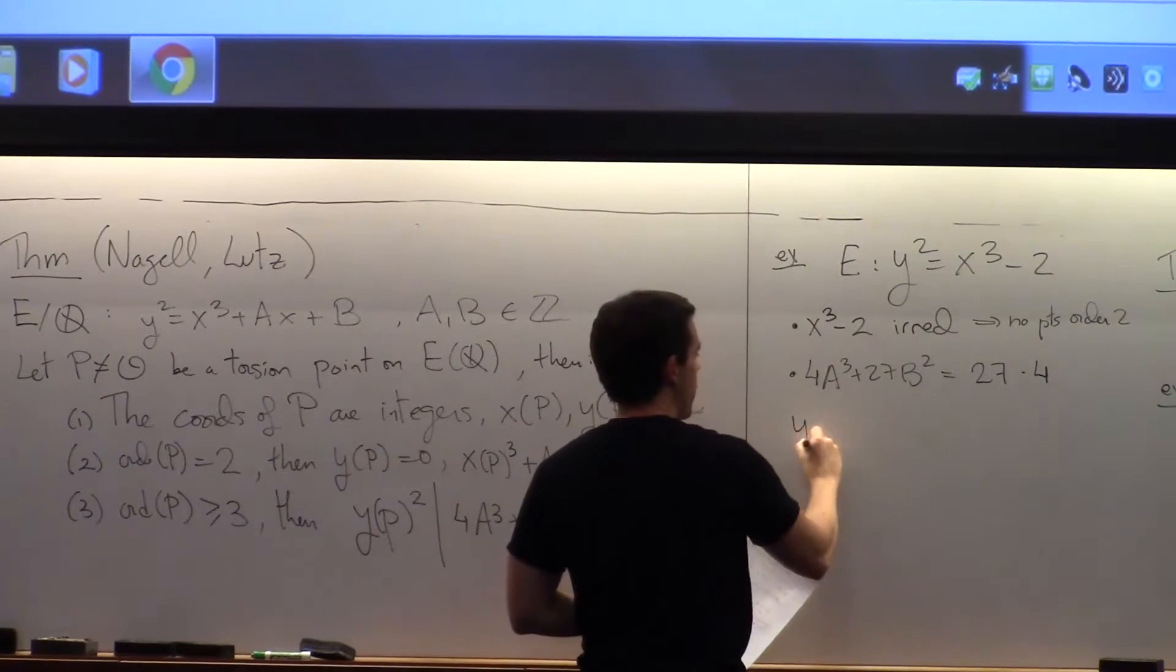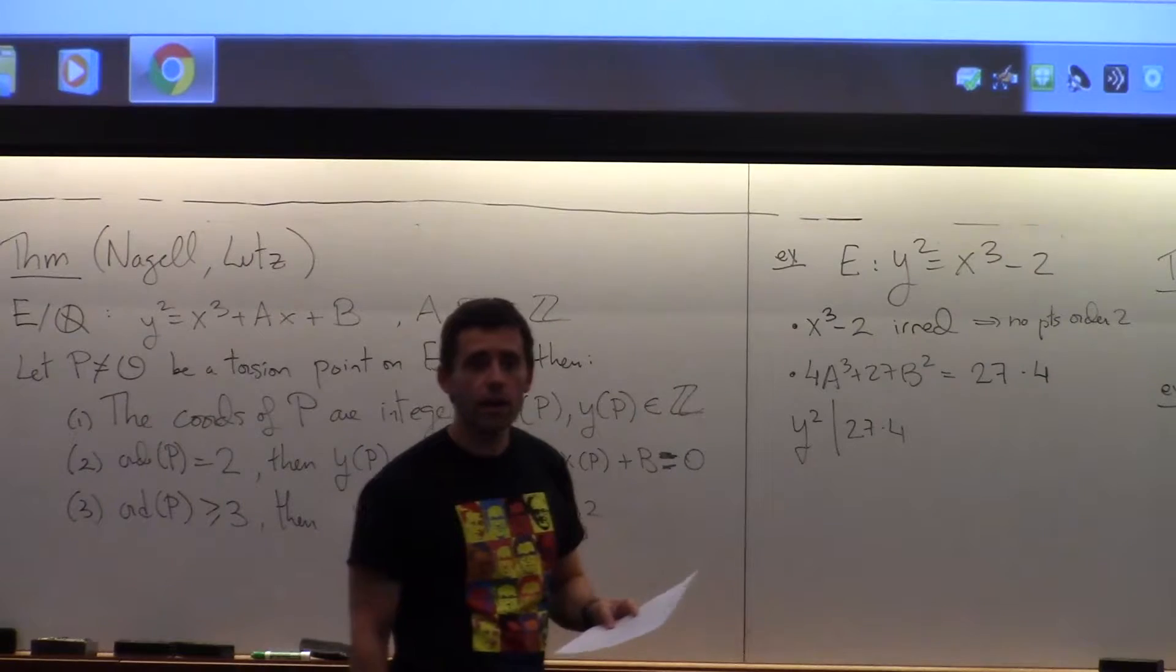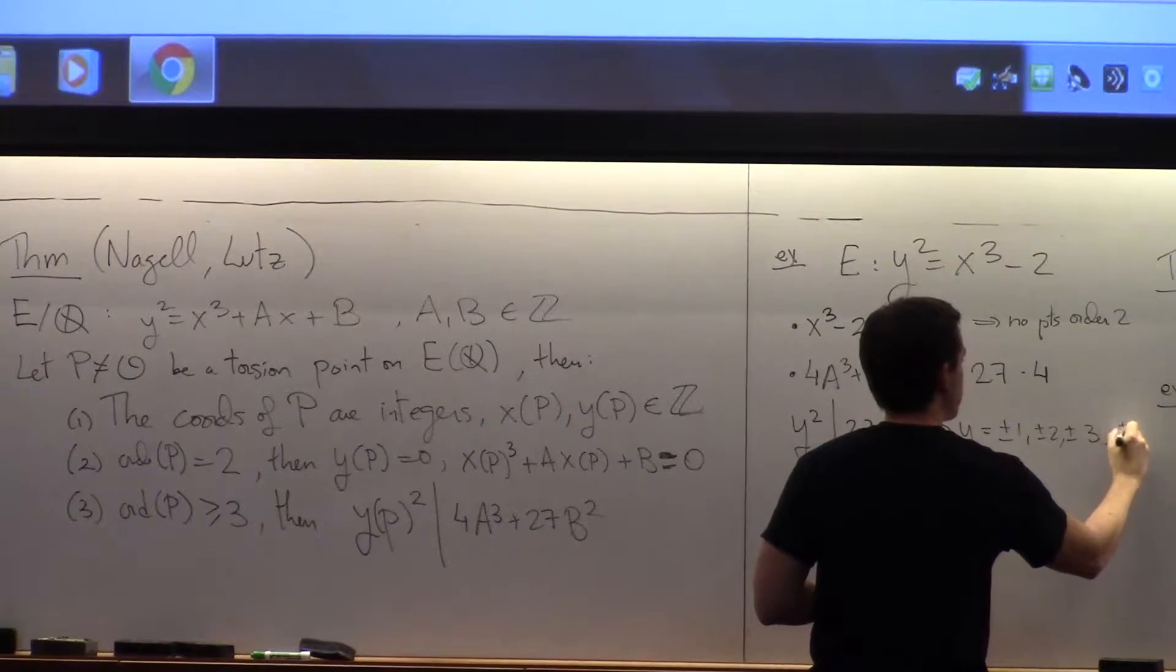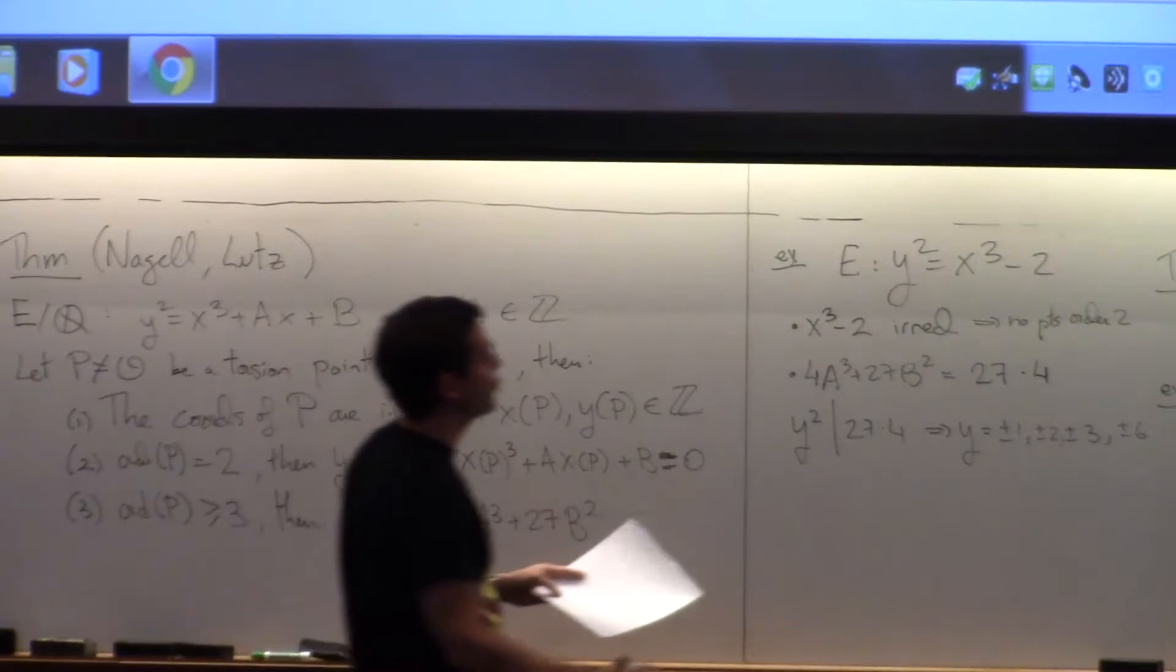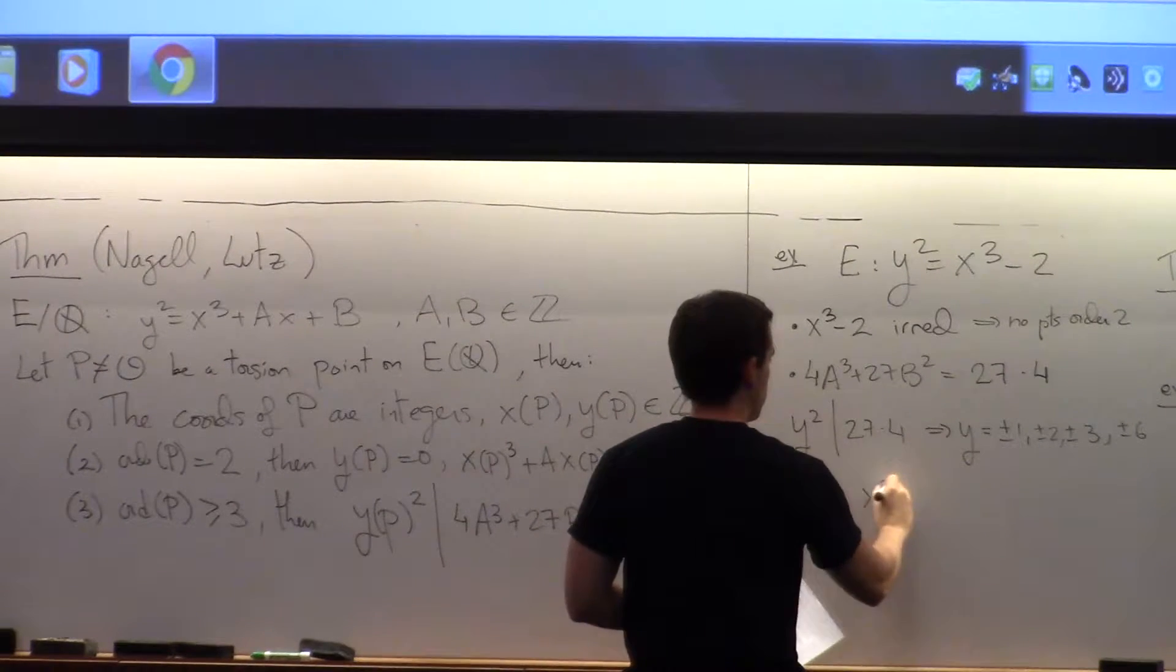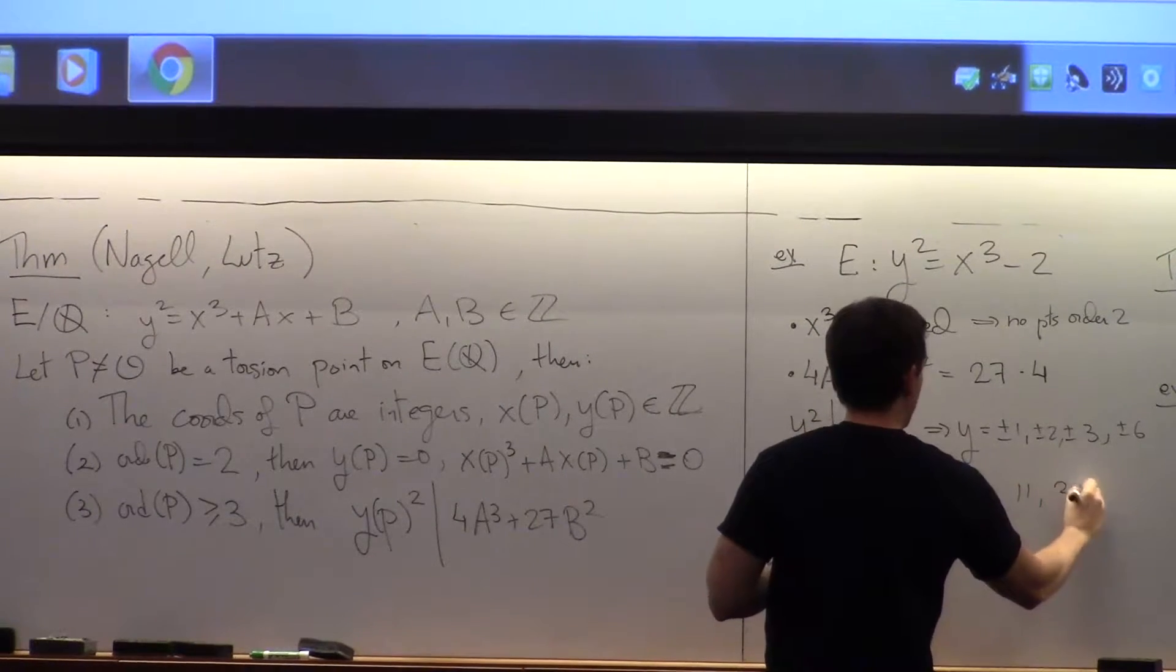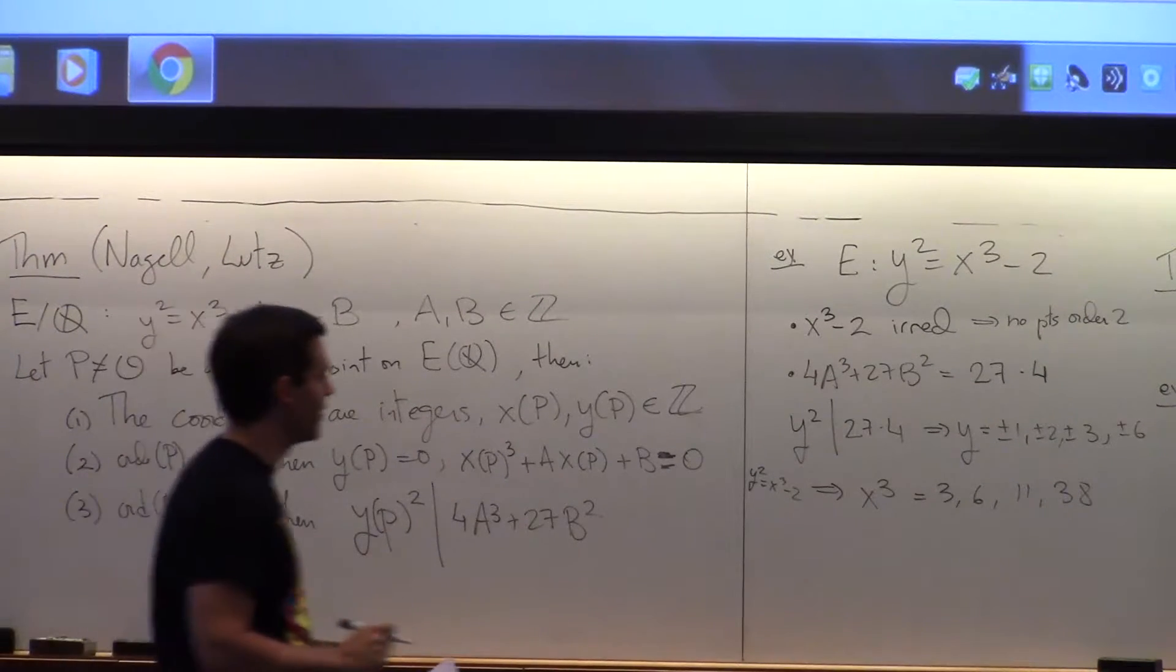And on the other hand, 4a³ + 27b² is 27 times 4. So y², if there is a point, y² would divide 27 times 4 squared. What are the possibilities for y, the y coordinate would be plus minus 1, plus minus 2, plus minus 3, or plus minus 6. And then if you throw those in here, then you get the possibility for x³. Since y² equals x³ - 2, then x³ should be 3, 6, 11, 4, 38. I don't know about cubes, but I know those are not cubes.